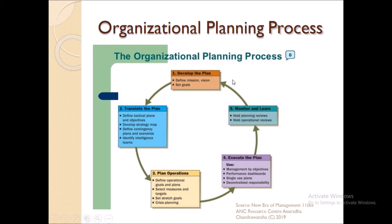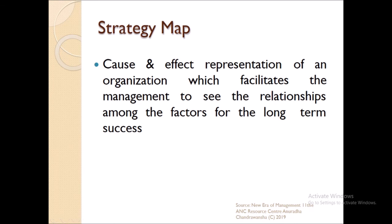Next we discuss the strategy map. It shows the causal effects of an organization's management relationships — the relationship among management levels and factors. A strategy map is a cause-and-effect representation of an organization that facilitates management to see the relationship among factors for long-term success. It shows how strategies, objectives, and different levels of goals are connected to achieve the overall objective in the long run.